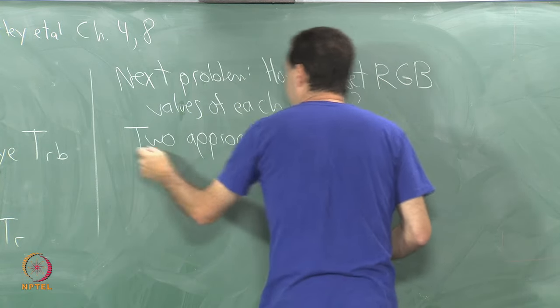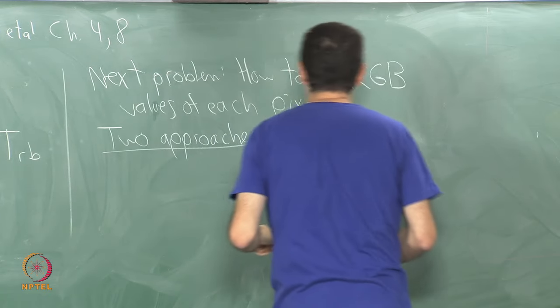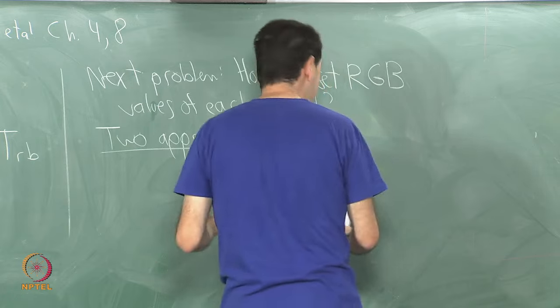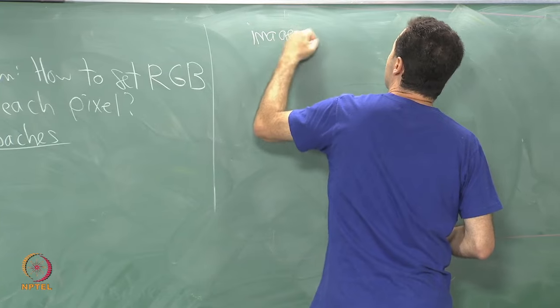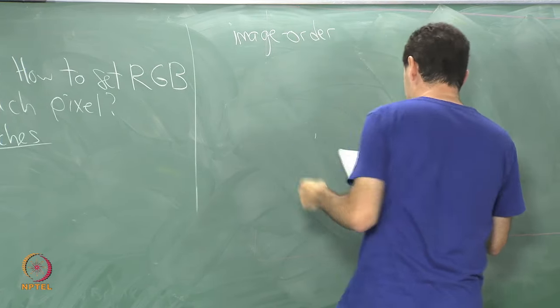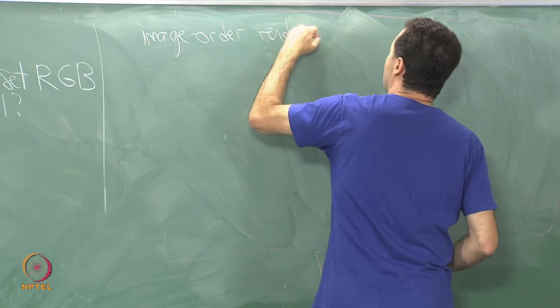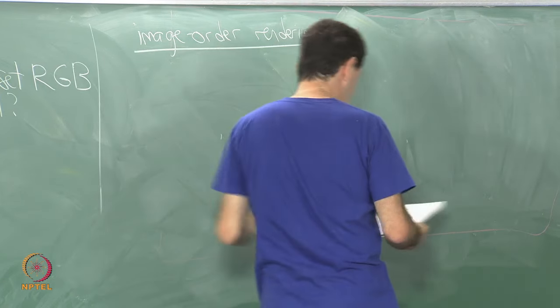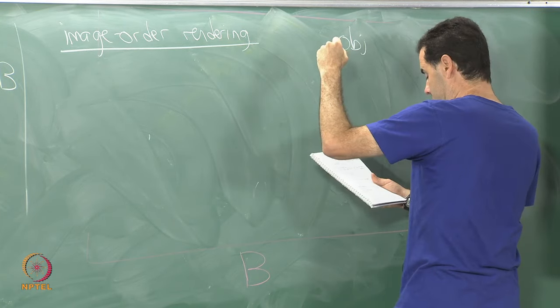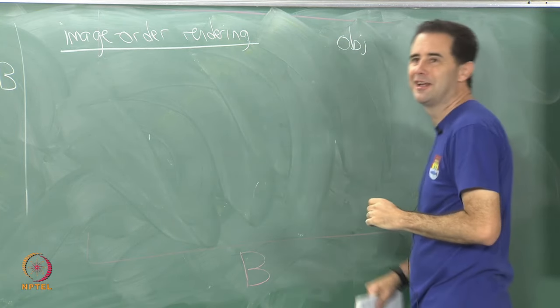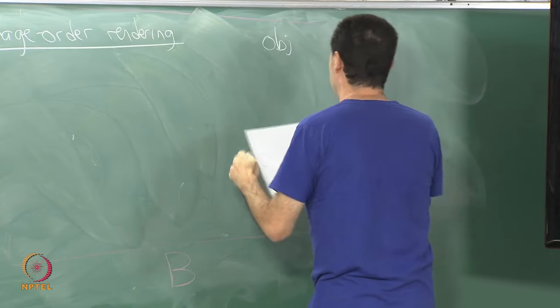And again, this is standard computer graphics. There is what is called image order rendering versus object order rendering. I said object oriented because we think like that in computer science, but object order rendering.